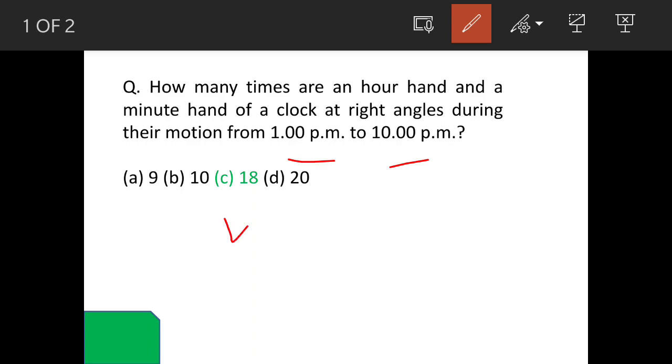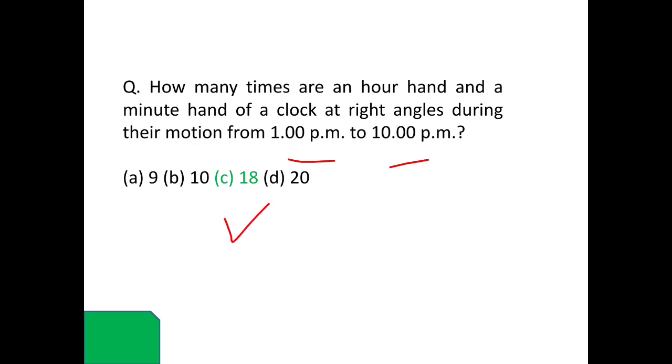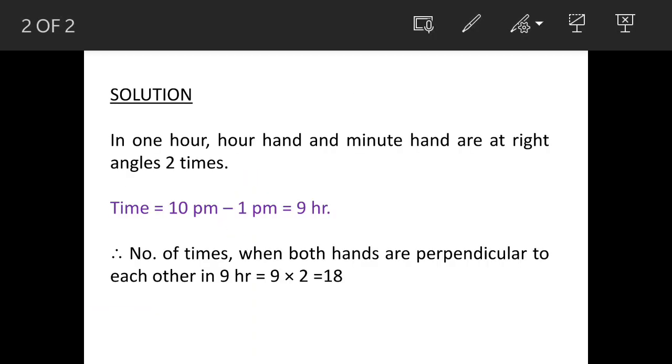We have answer options and option C is the correct answer. We will see the details now. In 1 hour the hands are at right angles 2 times. For example, this is the clock and this is 1 pm.